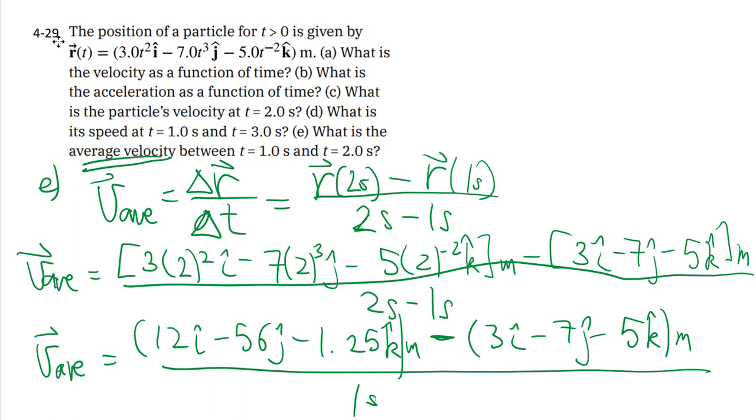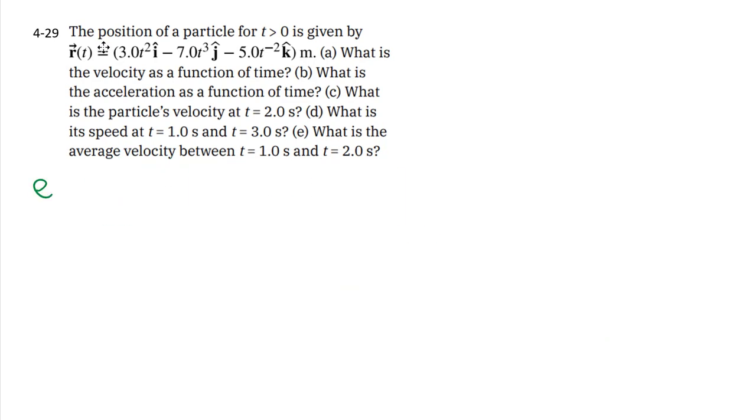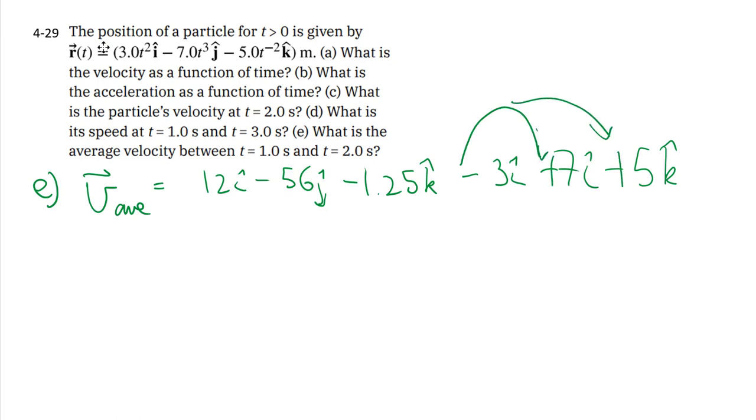The main takeaway is you have to collect like terms. You've got to do the i's, then the j's, and the k's separately. Just be extra careful with the negative sign. Because we got rid of this bracket, this negative sign carries through and changes these two things to positive. Then we're dividing by one second. Collect like terms, i's with the i's, j's with the j's, k's with the k's. That's your average velocity between these two times.